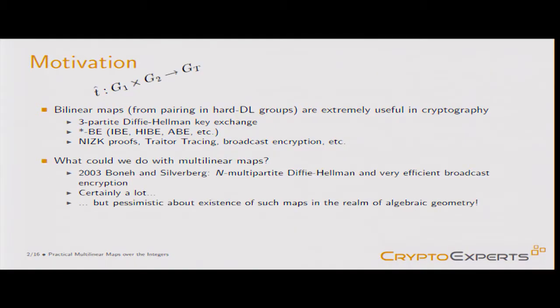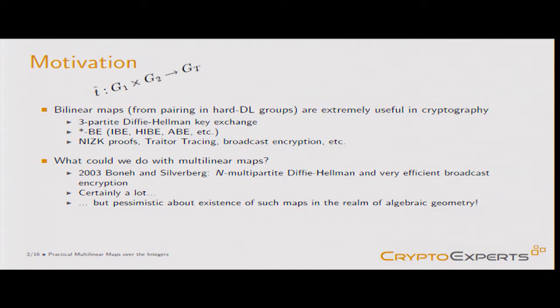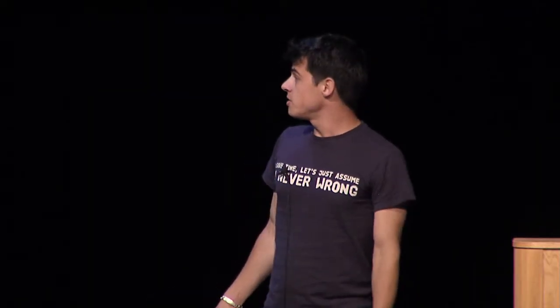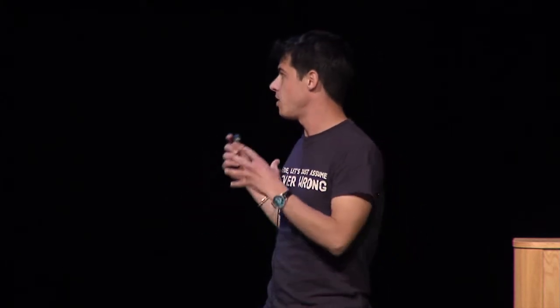It's really exciting. In 2003, Boneh and Silverberg asked themselves what could be done if, instead of having bilinear maps, we had multilinear maps. They proposed two applications: multiparty key exchange with N parties, and a very efficient broadcast encryption scheme. The thing is, they were quite pessimistic about the existence of these maps in the realm of algebraic geometry.